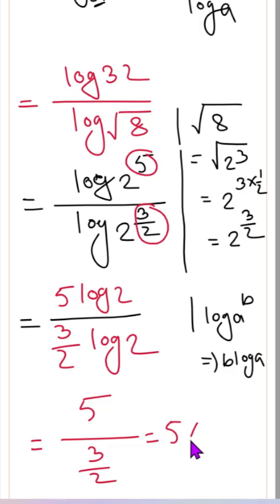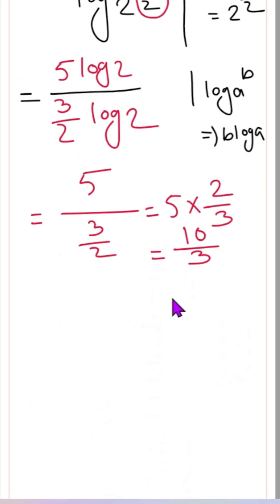5 times 2/3 gives us 10/3. This is an improper fraction, which we can also write as 3 and 1/3, a mixed fraction. Thank you.